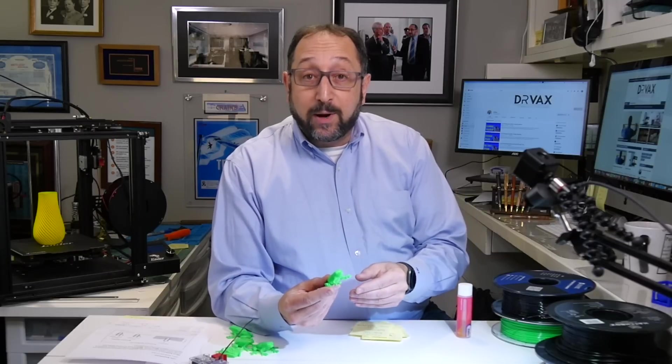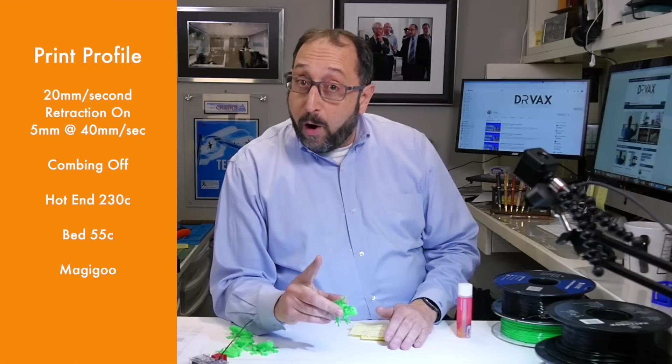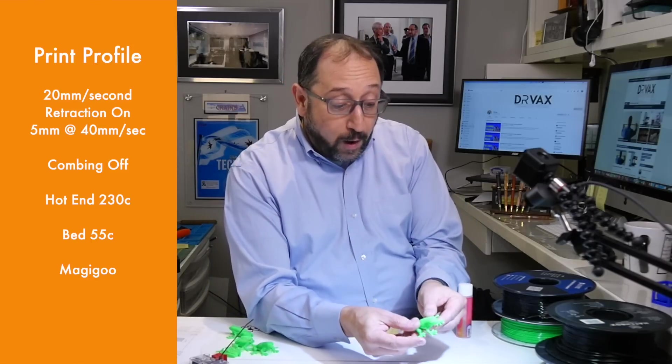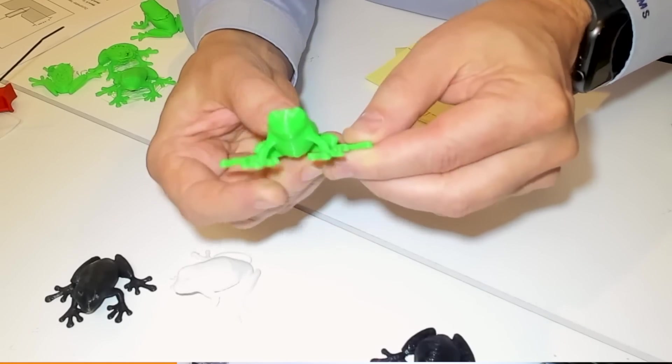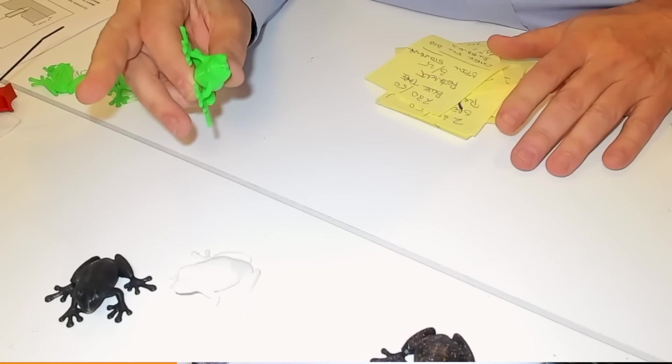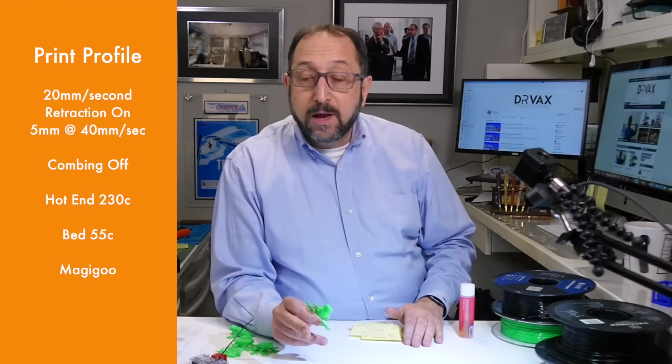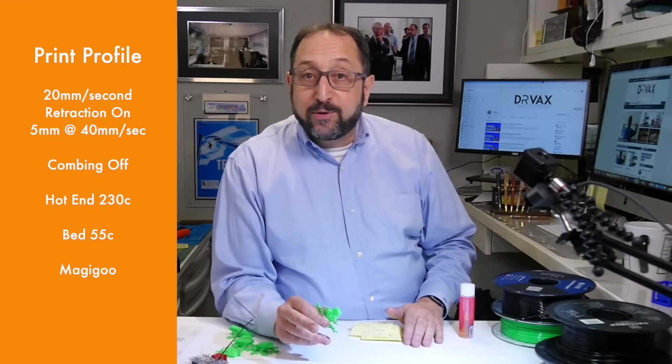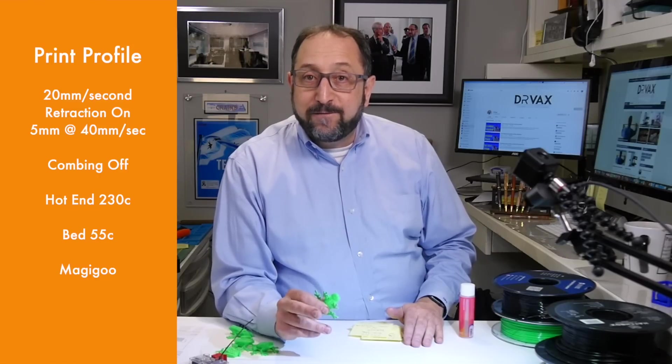I found the optimal configuration was 20 millimeters per second as overall speed. Retraction left on, interestingly enough, because you can see this print is quite good with very little stringing. I did not clean this up. Retraction on at 5 millimeters, 40 millimeters per second, combing off a print temperature of 230 degrees Celsius with a heated bed set to 55 degrees.